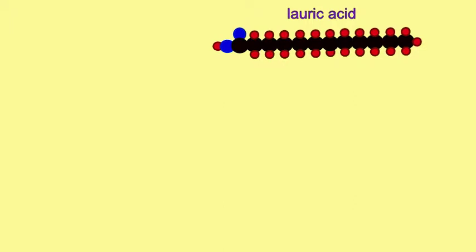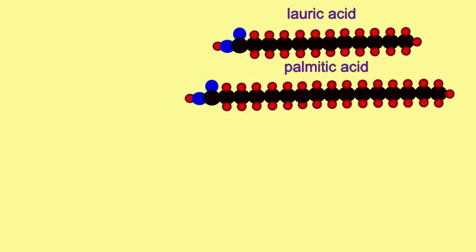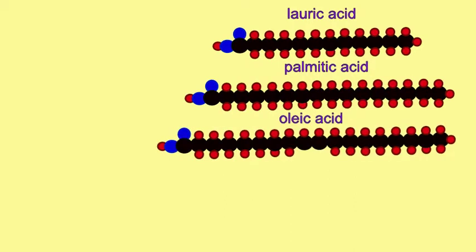Lauric acid is a saturated fatty acid with 12 carbons, while palmitic acid is a saturated fatty acid with 16 carbons. The next three fatty acids all possess 18 carbons.